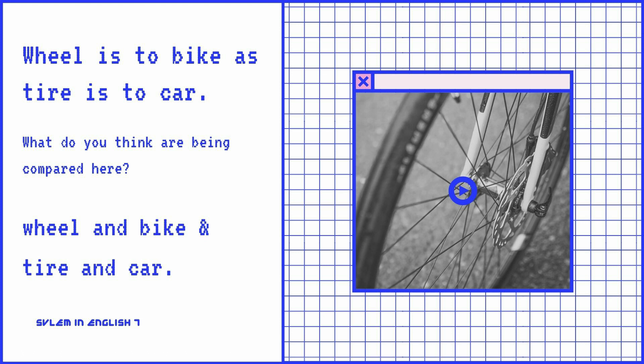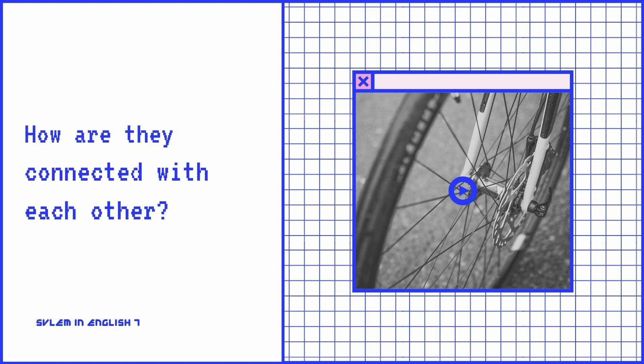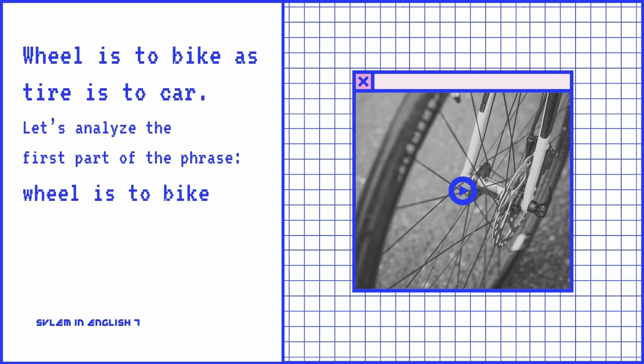What's being compared here are wheel and bike, and tire and car. How are they connected with each other? Let's look at the phrase again: Wheel is to bike, as tire is to car.